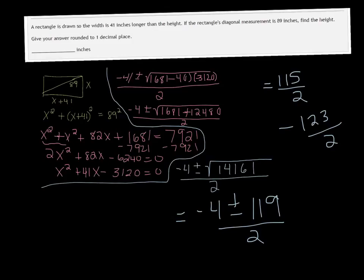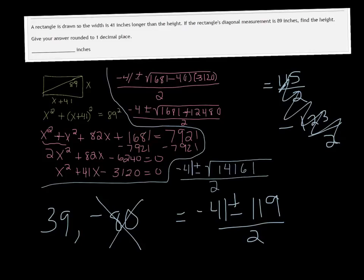And I just realized that I dropped my 41 along the way, so these should be 41s, which would change these answers. So, negative 41 plus 119 is 78, and you divide that by 2 and you get 39. So, one answer is 39, and then negative 41 minus 119, divided by 2 is negative 80. So, obviously, the negative answer doesn't make sense, because we're talking about length. So, the height is going to be 39 inches.